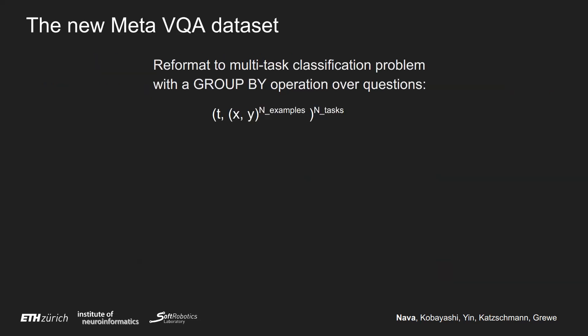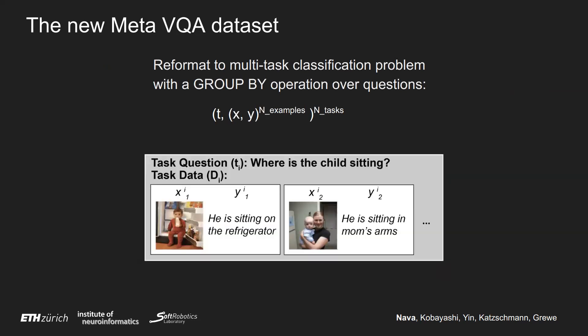What we want to do is to reformulate this dataset into a multi-task image classification dataset, using a group-by operation over questions, so that now every task question is essentially a task descriptor and its own task in the dataset. To every question, we associate an entire small dataset of tuples X, Y of images and answers, so that the tuples individually consist of image classification data points. Overall, we obtain more than 1,000 tasks and more than 100,000 total question-answer pairs.